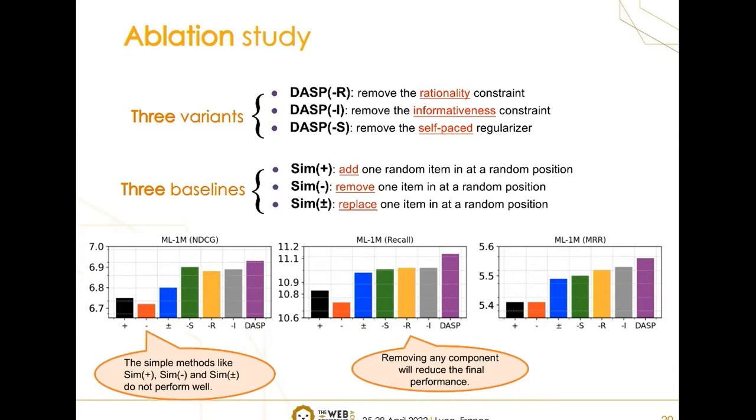Moreover, comparing with DASP, the lowered performance of DASP-S verifies the effectiveness of our idea on regularizing the training samples, which also evidences the potential of self-paced learning for the generative sample task in reinforcement learning.